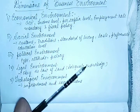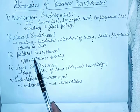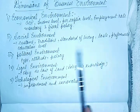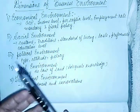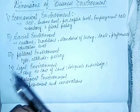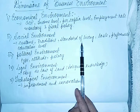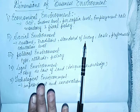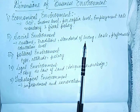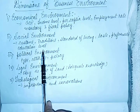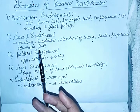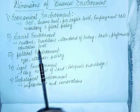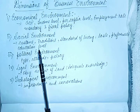Second is social environment. Social environment means the customs, traditions, standard of living, taste, preference, and education level of society which directly or indirectly affect our business. For example, if society is very educated, people will take a good diet, focus on fitness, and consume protein drinks. They will hire yoga teachers, so all health-related industries will flourish.